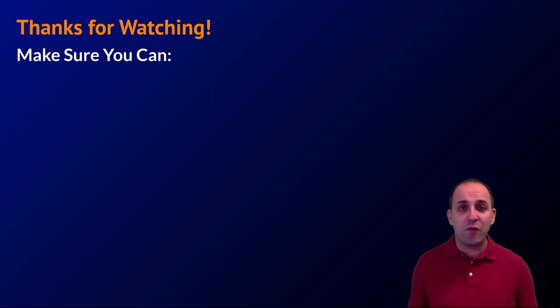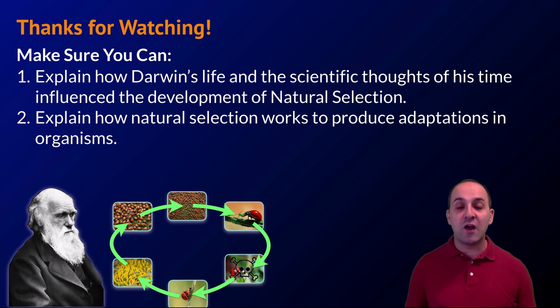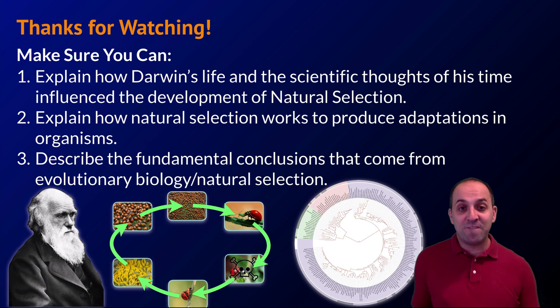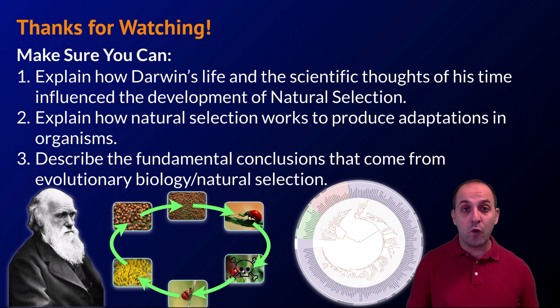To wrap up, make sure you can explain how Darwin's life and the scientific thoughts of his time contributed to the development of the theory of natural selection, explain how natural selection works to produce adaptations in organisms and populations, and describe the fundamental conclusions that come from evolutionary biology. If you can do those things, you're doing great. Write down any questions you have so you can get answers as you go forward.